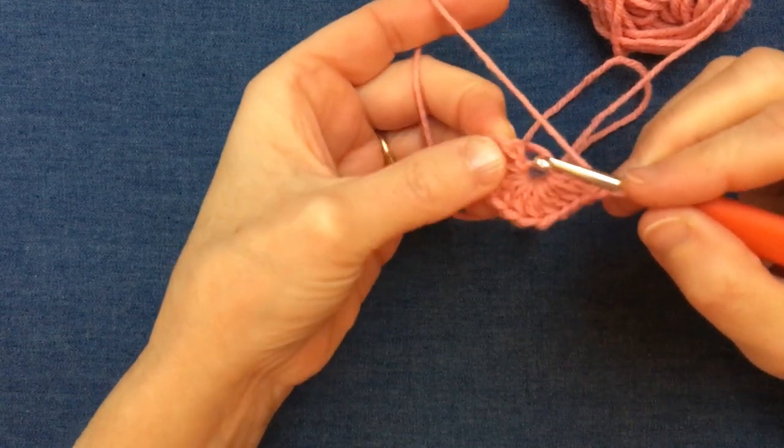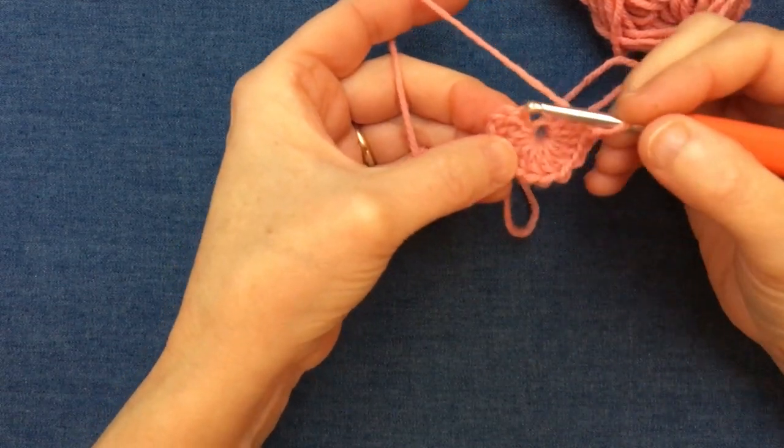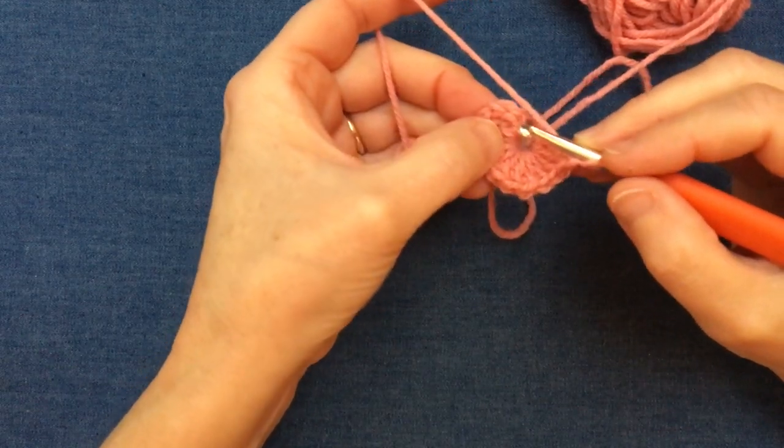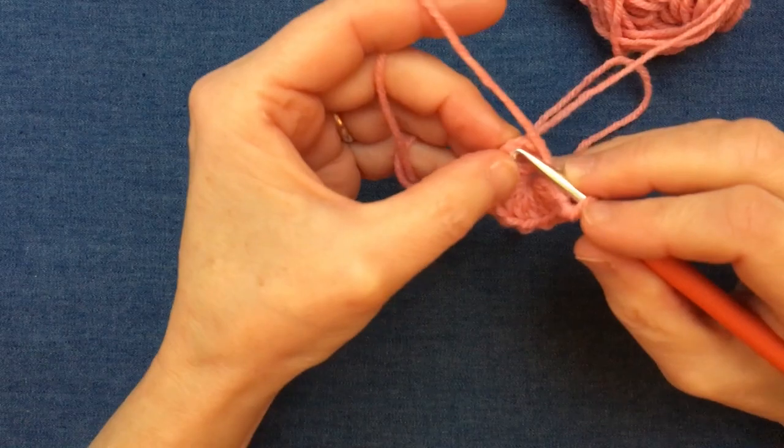So I'm going to go into the top of my chain. If you close it up completely at this stage, it's sometimes a little bit tricky to see where your stitch is going into. So one, two, three, there's the top of my chain. I can go into there with my normal slip stitch.